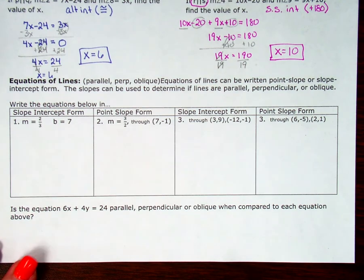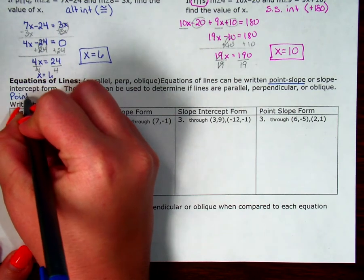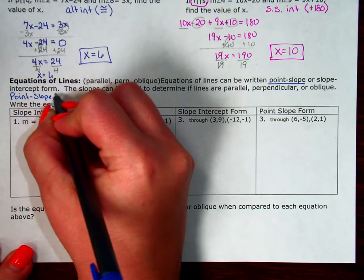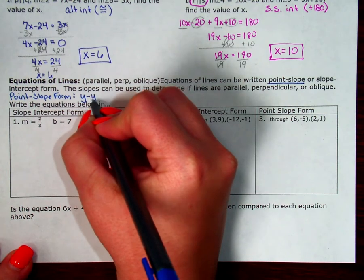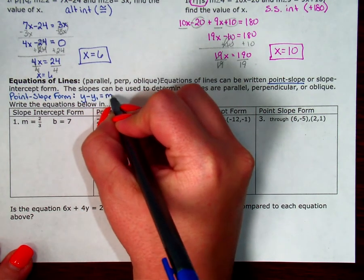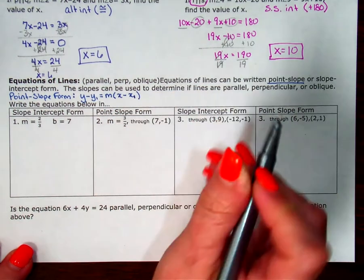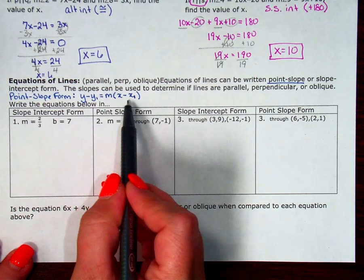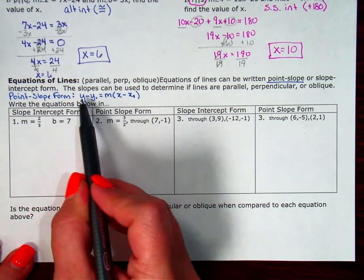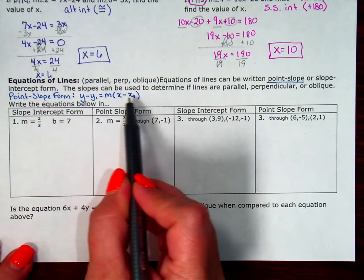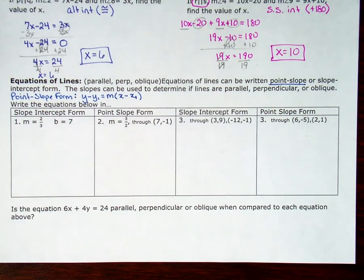The first thing we want to talk about is what our forms look like. Point-slope form looks like y minus some given y value equals my slope times x minus some given x value. When we use this, we leave it looking exactly like this — we don't solve it at all. The only simplifications we do are turning a double negative into a positive, dropping a zero, or removing unnecessary parentheses.